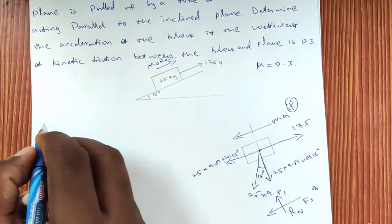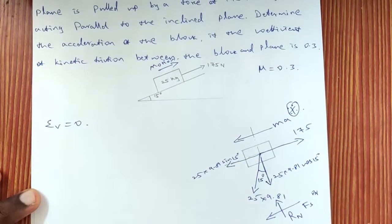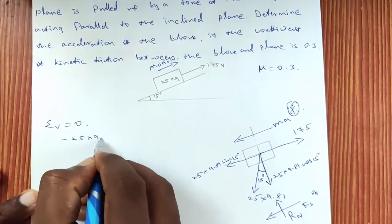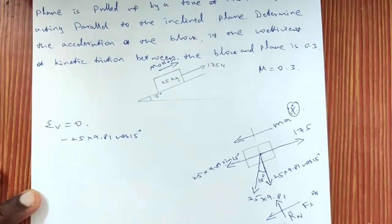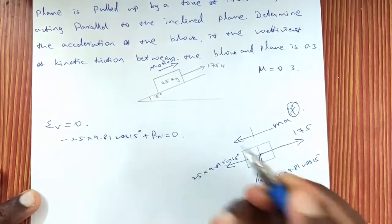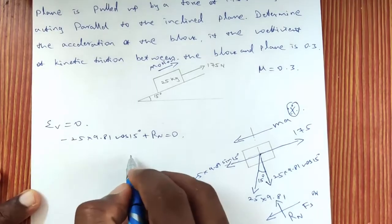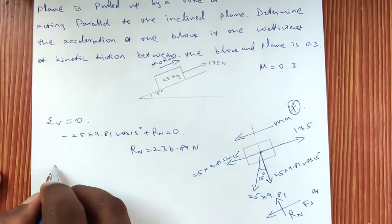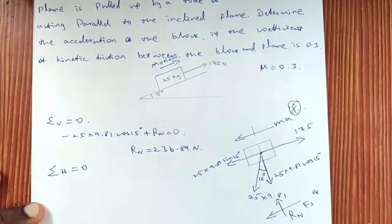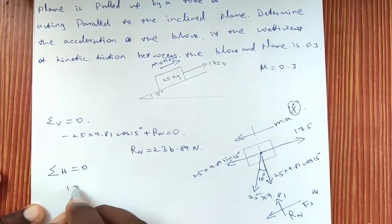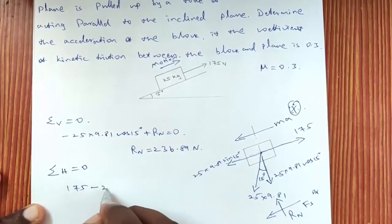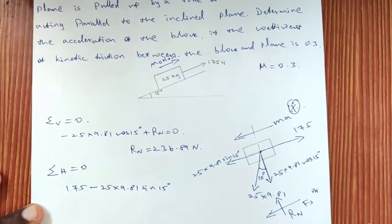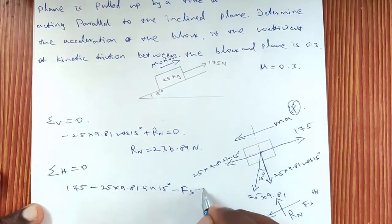We write summation of vertical forces = 0 and summation of horizontal forces = 0. For vertical equilibrium: RN − 25 × 9.81 cos15° = 0, giving RN = 236.89 Newton. For horizontal equilibrium: 175 − 25 × 9.81 sin15° − Fs − ma = 0. Fs is acting towards the left and ma is also acting towards the left-hand side direction.